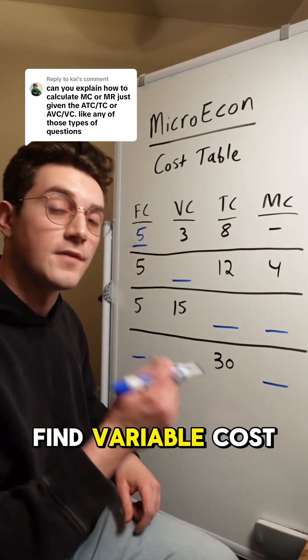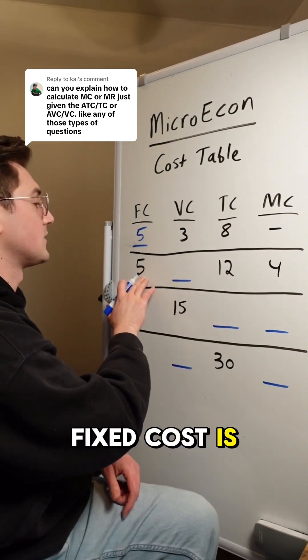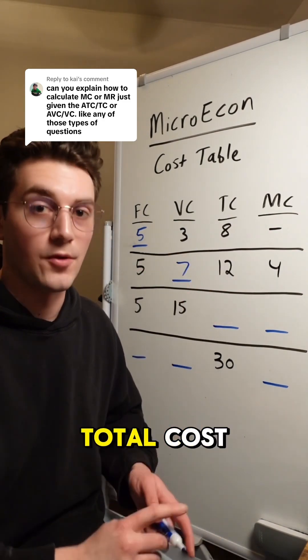All right, next row here, we need to find variable cost. Very similar strategy as before. Our total cost is 12, our fixed cost is five, 12 minus five is seven. Remember, fixed cost plus variable cost equals total cost.